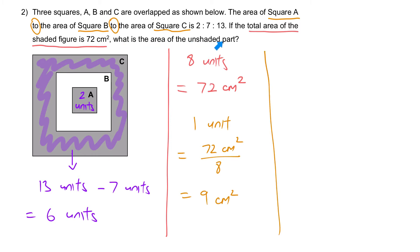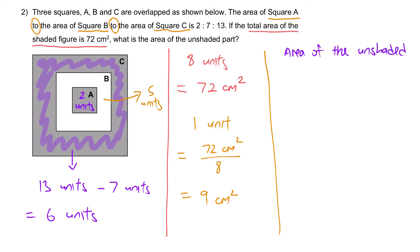What is the area of the unshaded part? To find the unshaded part, we just need to take B minus A. We need 7 units minus 2 units, to give us 5 units. Therefore, area of the unshaded part is 9 cm² times 5, which gives us 45 cm².